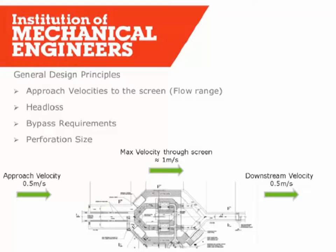On head loss: Rob will touch on this later, but you need to assess the screen in both its clean and dirty head loss conditions. There are different ways of doing that and manufacturers will have their own approaches. Always be aware that you need to consider both options. Bypass requirements: it is always good practice to have a bypass on your inlet screens because at some point they will blind or fail - that's not a possibility, it's a given. On your bypass you need to be able to pass full flow and ideally screen it, perhaps with a 50mm bar screen, which would typically be manual. Perforation size is sometimes dictated by the environmental permit but can be made tighter by downstream process constraints - for example, a membrane bioreactor may require screening down to three millimeters in two dimensions.